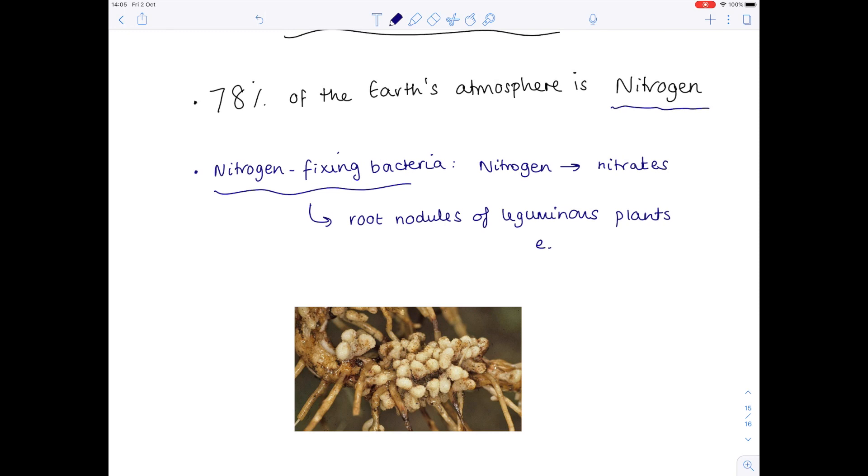Examples of leguminous plants include peas, beans, and clover. So the more the farmer plants these sorts of crops, the more fertile their soil will be, and that's because lots of nitrates have been added to the soil.